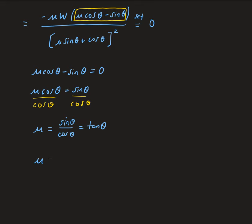So we have that mu equals tangent theta, which is the same as theta equals tangent inverse of mu. We just take arctan of both sides to isolate theta. So we now have theta in terms of mu — in terms of our coefficient of friction.